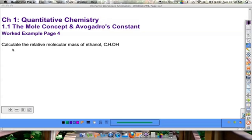In this example, it asks us to calculate the relative molecular mass of ethanol, which is C2H5OH. That would be a good compound symbol to memorize, remembering that the common name is ethanol.